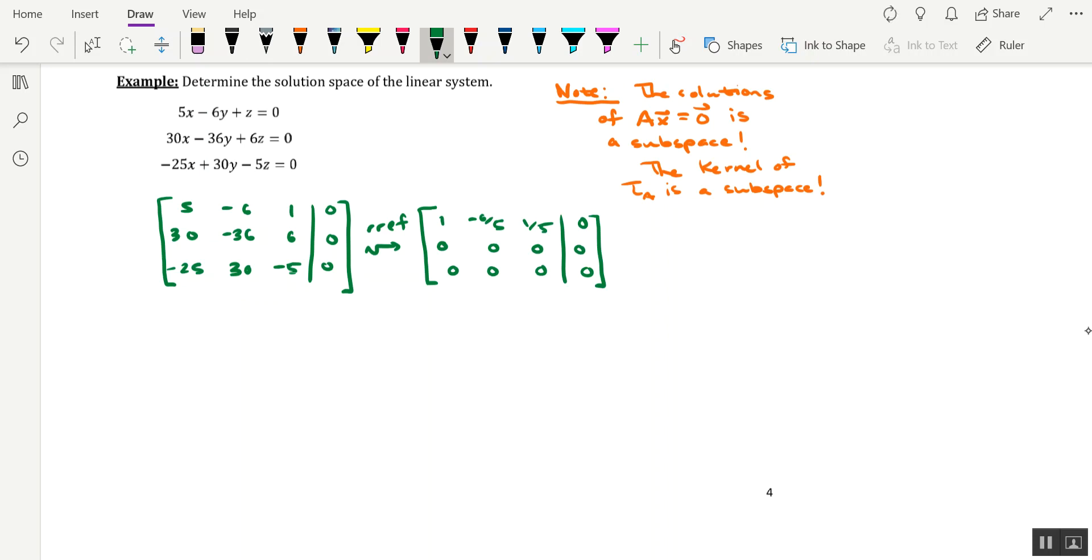So it turns out that we might need some parametric equations here. In particular, there will be two parameters. Let's keep in mind that the first column is for the variable x, second column is for y, and third column is for z. So, what row 1 tells us in this matrix is that x minus 6 fifths y plus 1 fifth z equals 0.